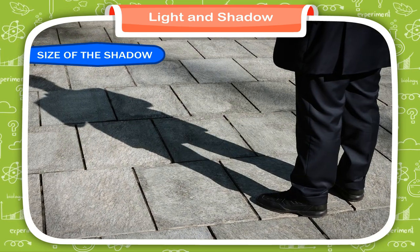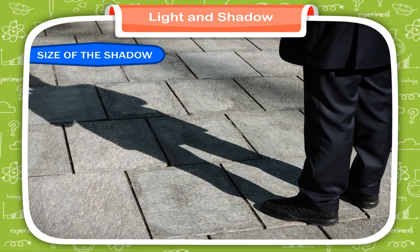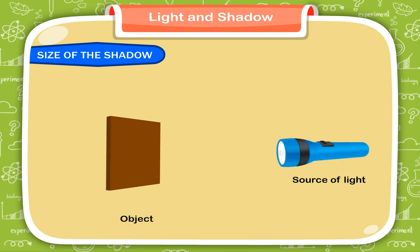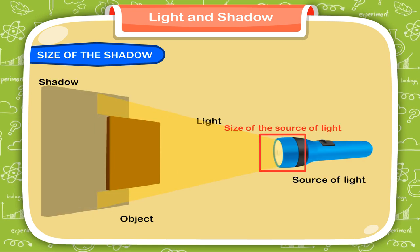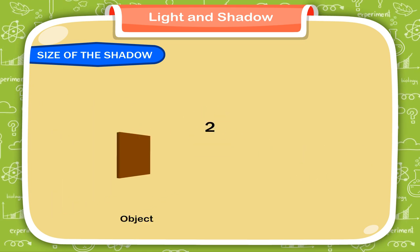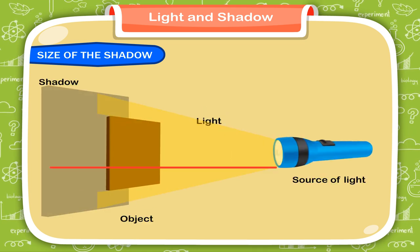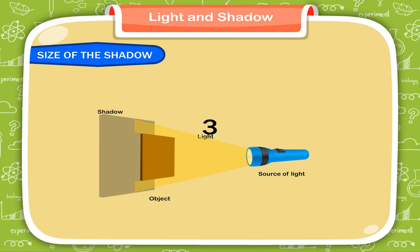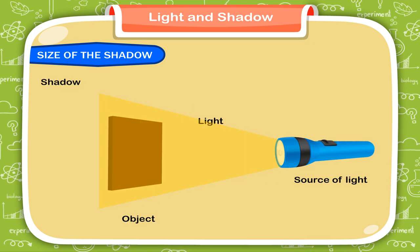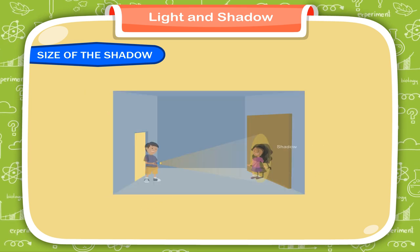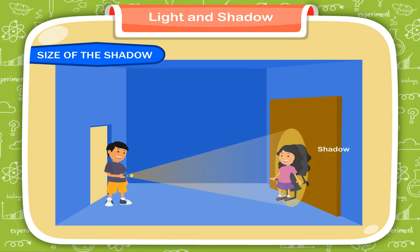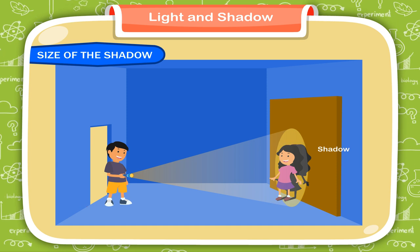The size of the shadow depends upon these factors: the size of the object and the size of the source of light; the distance between the source of light and the screen; and the distance between the object and the screen. Hence, we conclude that a shadow forms only when there are a source of light, an opaque body, and a screen.